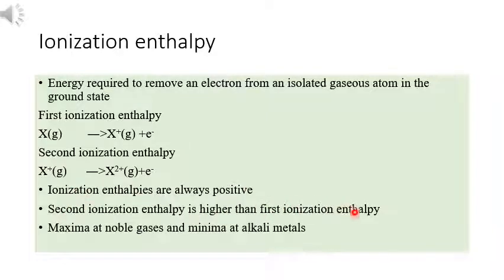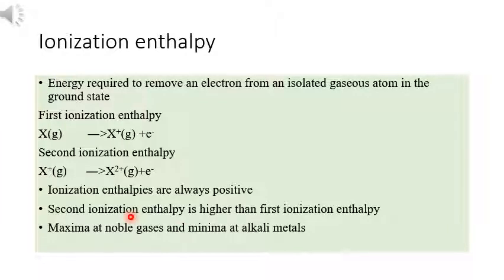The second ionization enthalpy is always higher than the first, because the next electron must be removed from a cation, which is smaller and has greater nuclear attraction. Noble gases have the maximum ionization enthalpy because it is very difficult to remove an electron from them. Alkali metals have the minimum because they only need to remove one electron to achieve noble gas configuration.